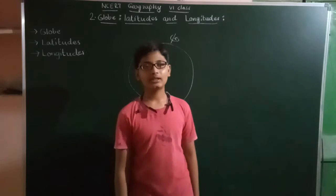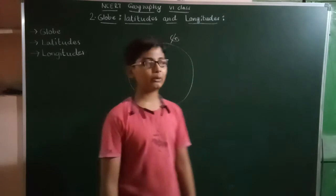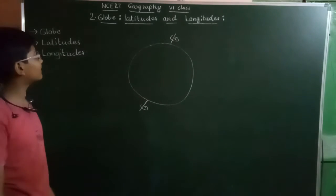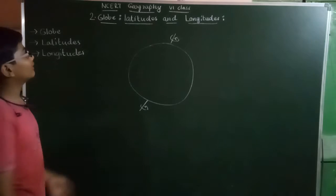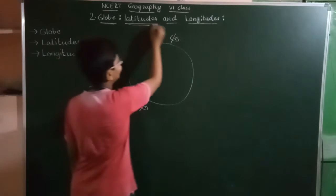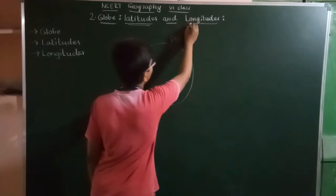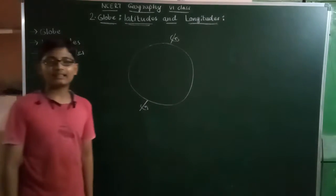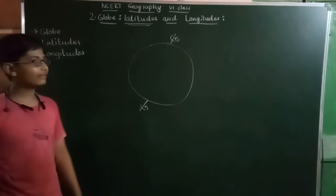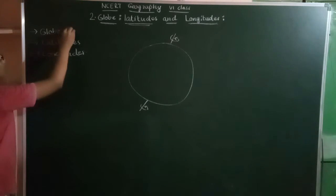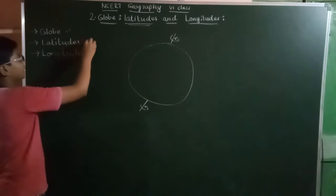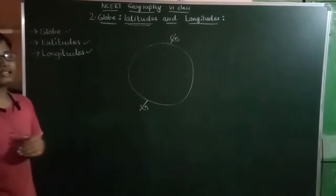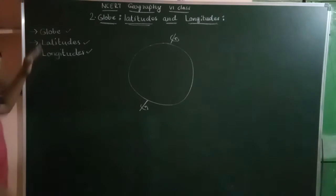This is Gautam Adarsh. Today we will look at NCERT Geography 6th class 2nd lesson, that is Globe, Latitudes and Longitudes. In this lesson we will learn about Globe, Latitudes, and also Longitudes. First we will see what is a Globe.